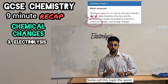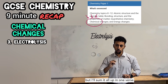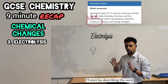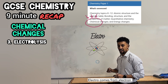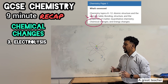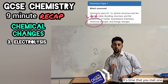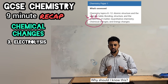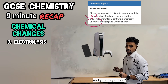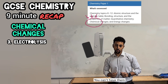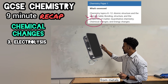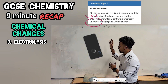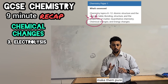Some call this topic the worst but I'll sum it all up in one verse. Electro comes from electron and lysis means to split. Your phone and your PlayStation — you can't have them without this process. Those metals have to be found — you find them as ores in the ground and we've got to make them pure.